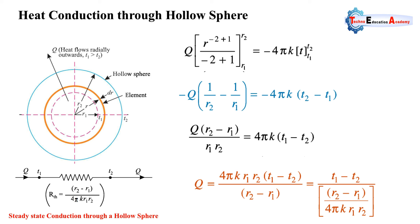Now we make Q the subject. The r1·r2 term is brought to the right-hand side, giving the final equation: Q = 4πk·r1·r2·(T1 − T2) / (r2 − r1).